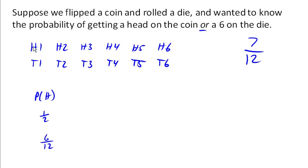6 of the outcomes have a head. What's the probability of rolling a 6 on the die? Well, that's 1 out of 6, right? 1 roll out of the 6 possibilities on the die. And in terms of our total outcomes here, 2 of them have a 6 on the die.